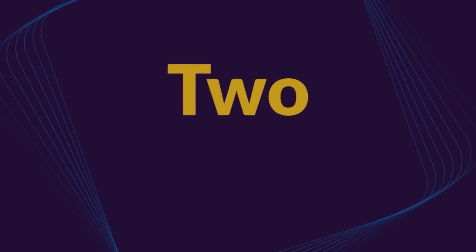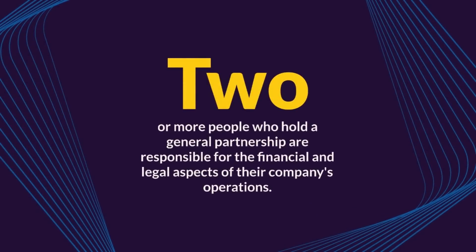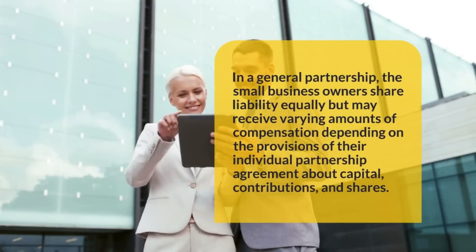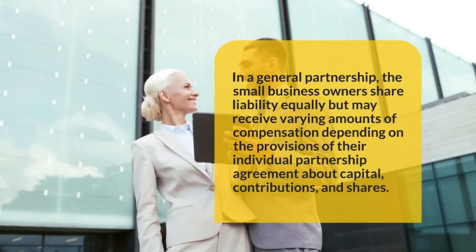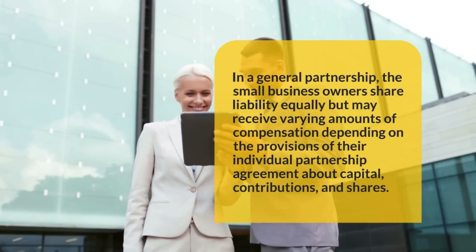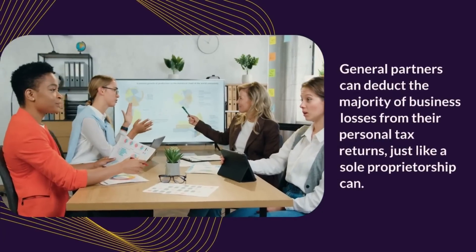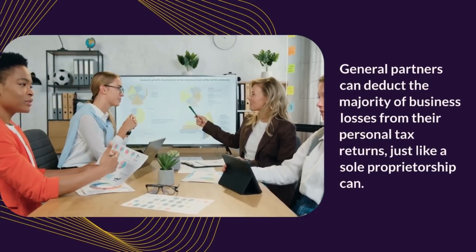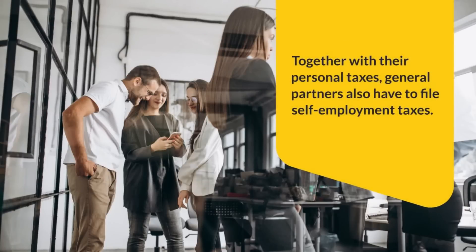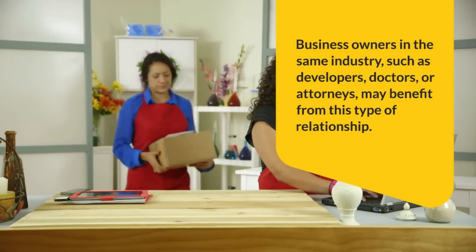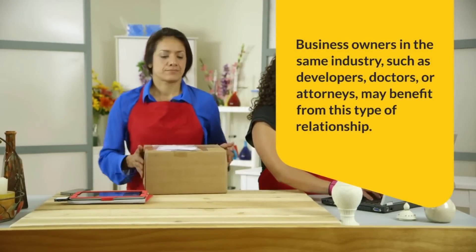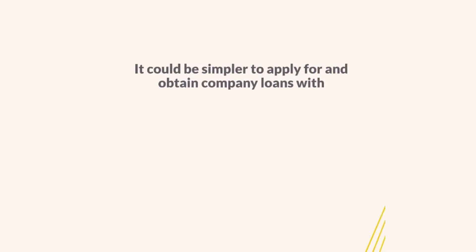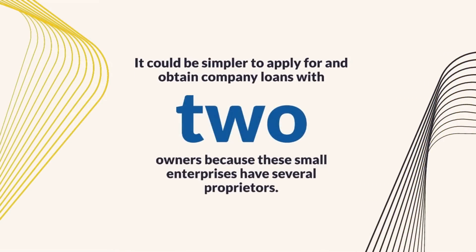2. General Partnership. Two or more people who hold a general partnership are responsible for the financial and legal aspects of their company's operations. In a general partnership, the small business owners share liability equally but may receive varying amounts of compensation depending on the provisions of their individual partnership agreement about capital contributions and shares. General partners can deduct the majority of business losses from their personal tax returns, just like a sole proprietorship can. Together with their personal taxes, general partners also have to file self-employment taxes. Business owners in the same industry, such as developers, doctors, or attorneys, may benefit from this type of relationship.